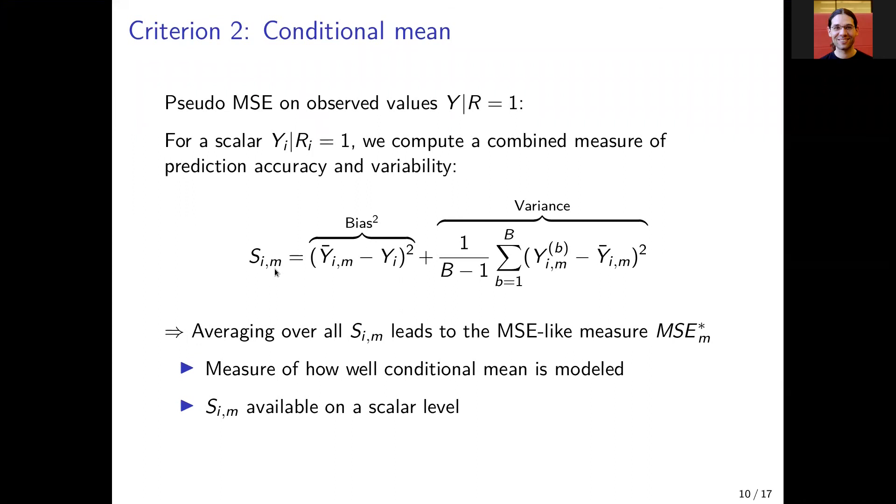We draw several capital B values that are then used to estimate the variance. Here yi m bar just represents the mean of all the draws.